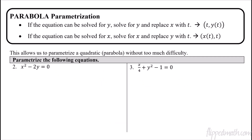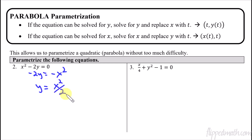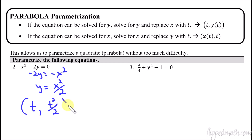Now let's look at how to parametrize parabolas — actually the easiest case since it's exactly what we just covered. If the equation can be solved for y, solve for y and replace x with t. Taking our equation, we get negative 2y equals negative x squared, so dividing by negative 2 gives y equals x squared over 2. Since we have y equals, the x coordinate is t and the y coordinate is t squared over 2. The domain is all real numbers.